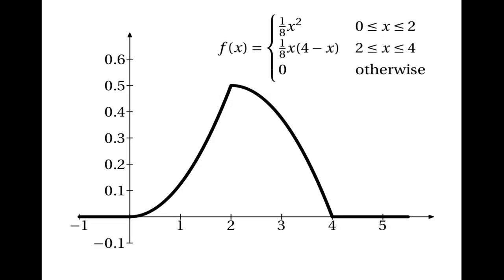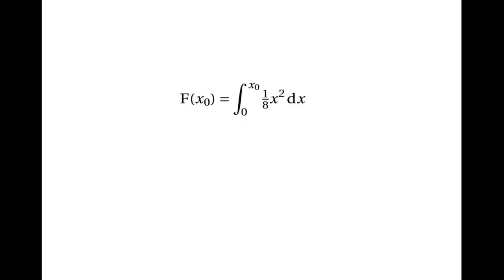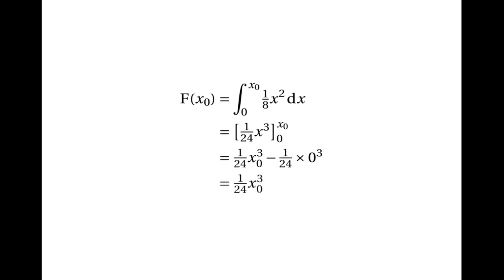It helps to visualise the graph of the probability density function. We need to deal with two cases. The first is when x0 is between 0 and 2. We can work it out using integration: F of x0 is the integral of an eighth of x squared with limits 0 and x0. That's 1 over 24 times x cubed evaluated from 0 to x0, which gives 1 over 24 times x0 cubed.